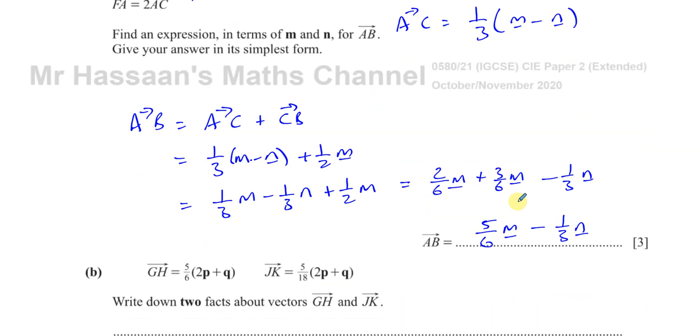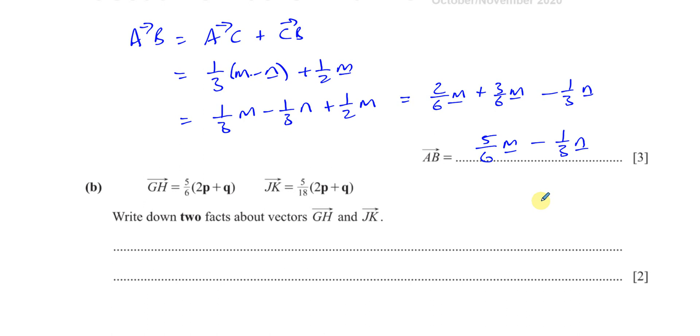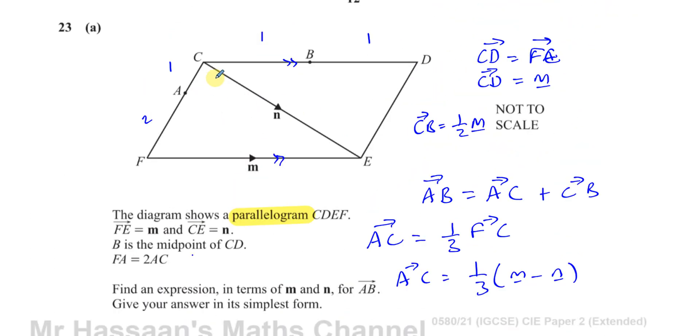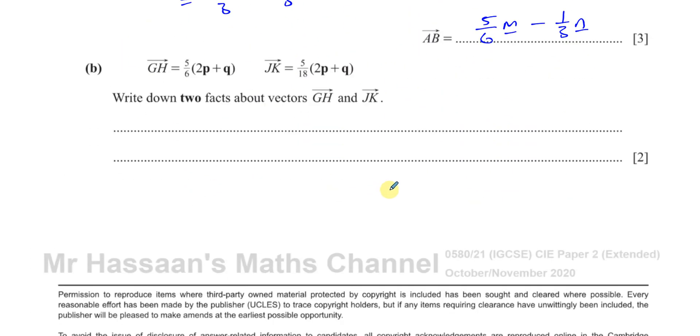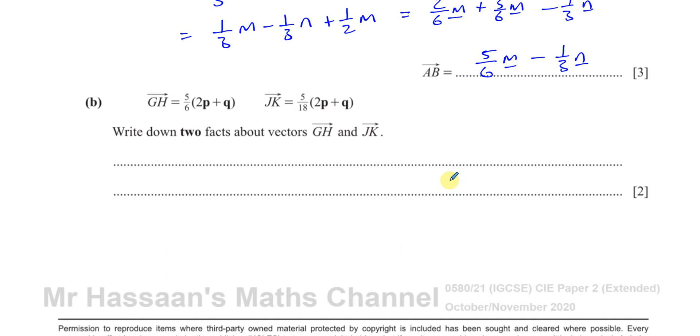That's part A done. Part B says G to H equals five sixths of 2P plus Q and J to K equals five over 18 times 2P plus Q. Write down two facts about vectors G to H and J to K. Now, this is not related at all to this question. They're different letters, different vectors. It's just a question by itself.